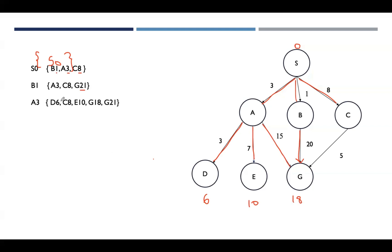Expanding A3, we keep C8 and G21 as they are, and add the new neighbors D6, E10, and G18. The node with the least cost is D6, so we expand D next. Node D has no adjacent nodes, so we write the remaining nodes as they are: C8, E10, G18, G21.